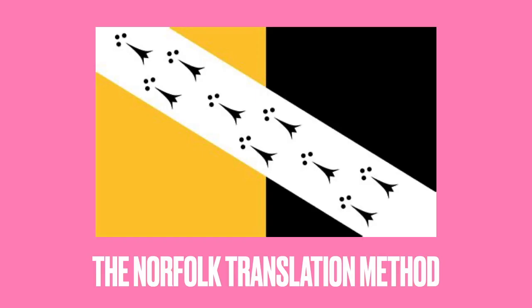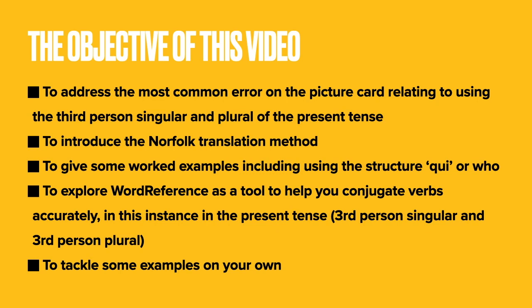So I'm hoping that the Norfolk Translation Method will help us to eradicate the mistakes that many of us are making when doing our picture cards and translating what is going on or what people are doing — that we take it into that Norfolk method and hopefully be more accurate in our use of the present tense, particularly using tools such as Word Reference. To summarize, we addressed the most common error on the picture card — putting 'is's', 'are's' and '-ings' where we don't need them — looked at the new method, how to join sentences with the conjunction 'qui', and how to use Word Reference to find verbs. Best of luck with your future picture cards.